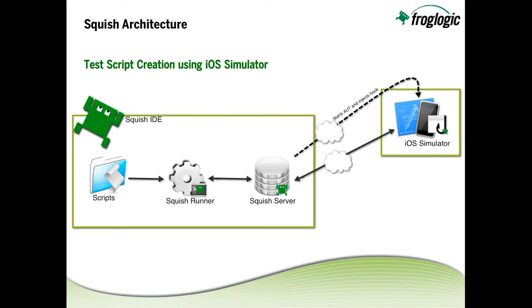For the Squish architecture, let's first take a look at test script creation. You're able to create scripts using an iOS simulator or an actual device. For the iOS simulator, the Squish IDE generates scripts using a combination of the Squish runner and the Squish server, with the Squish server launching the AUT or application under test, injecting a hook, and recording all steps performed by the user within the AUT.